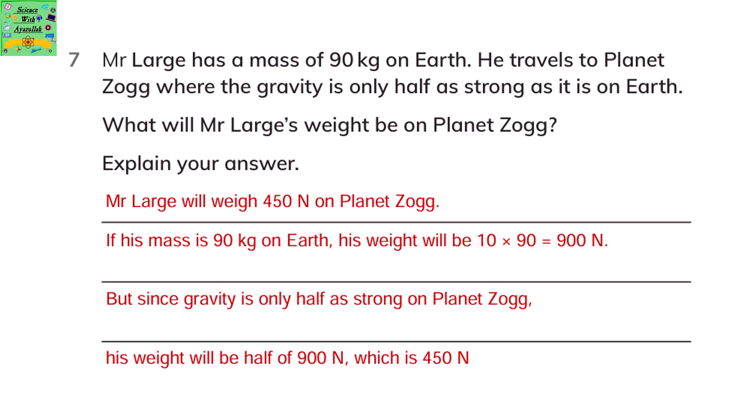Explain your answer. Mr Large will weigh 450 newton on planet Zorg. Because if his mass is 90 kg on earth, then his weight on earth will be 900 newton when you multiply 90 into 10. But since gravity is only half as strong on planet Zorg, his weight will be half of 900 newton which is 450 newton. Here 10 is the unit for gravity.